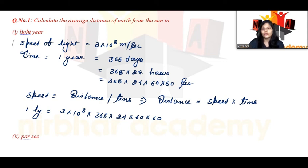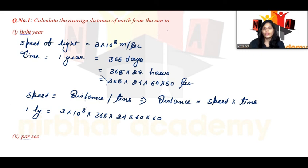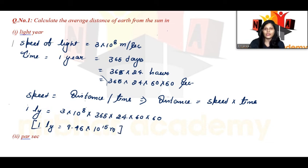So, 1 light year is equal to speed 3 into 10 to the power 8, multiplied by time 365 into 24 into 60 into 60 seconds. The value of 1 light year is equal to 9.46 into 10 to the power 15 meters.